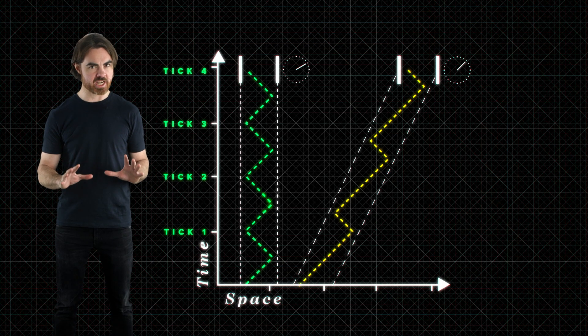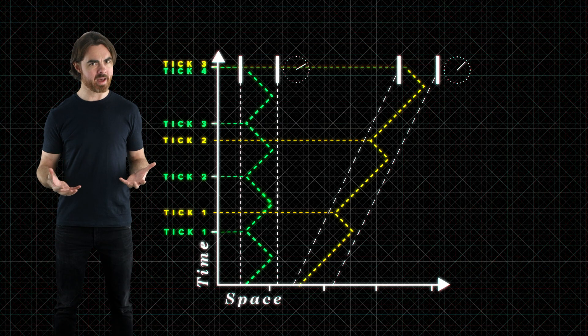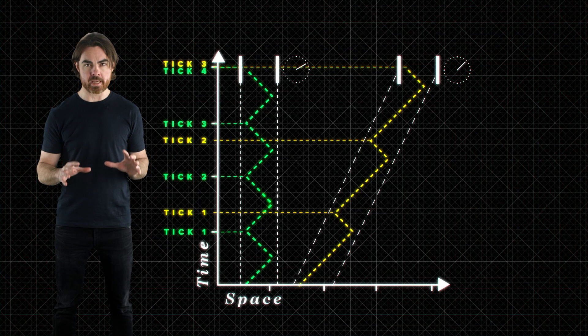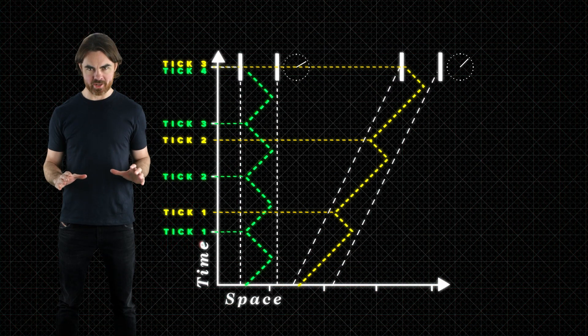Regardless of the speed of that clock, the internal photons always do those 45 degree paths back and forth. But check it out. On the timeline of the stationary clock, the ticks of the moving clock don't match up. The moving clock appears to tick at a slower rate. This is the same result that we saw in the episode on time dilation.